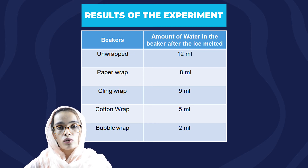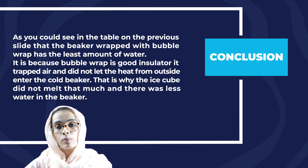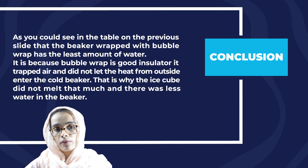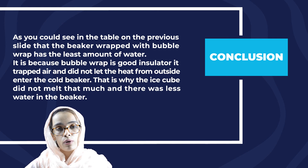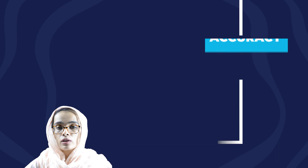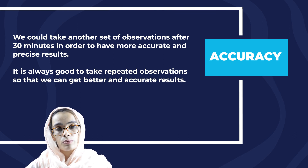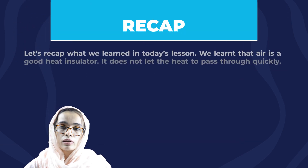From this experiment, the beaker wrapped with bubble wrap has the least amount of water because bubble wrap is a good heat insulator — it trapped air and did not let heat from outside enter the cold beaker, so the ice cube did not melt much. We could also take another set of observations after 30 minutes for more accurate and precise results, as it is always good to take repeated observations.